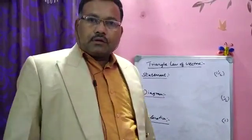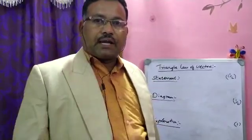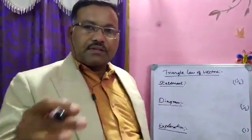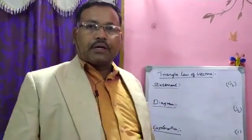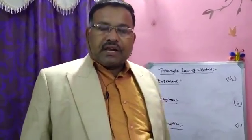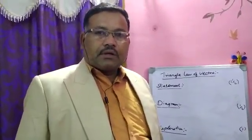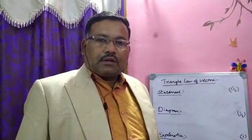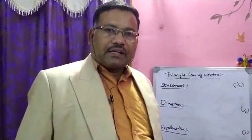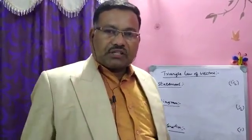First I will explain the statement, then I will draw the diagram, then I will give explanation for the diagram. In the previous class we have seen addition of vectors, and on the basis of that principle we are going to draw the triangle of vectors. Now the statement: if two vectors are represented in magnitude and direction, then the resultant is represented in magnitude and direction by the third side of the triangle taken in reverse order.